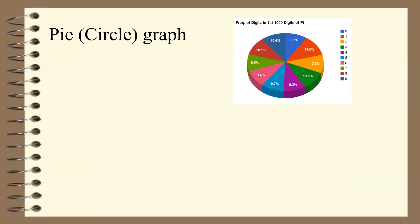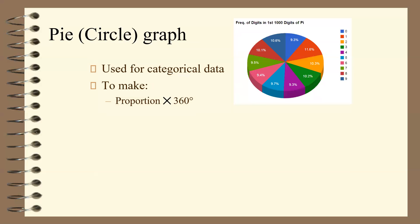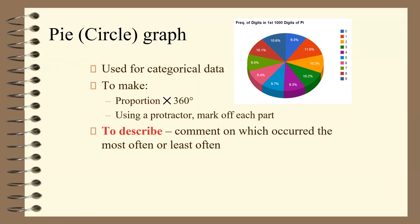Next, the pie graph, also called a circle graph — it is used for categorical data. To make a pie graph, take the proportion and multiply it by 360 degrees; that tells you how many degrees to make each pie slice. Use a protractor to mark off each part. To describe a pie graph, comment on which category occurred most often or least often.